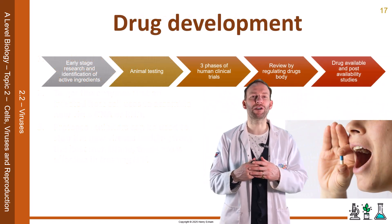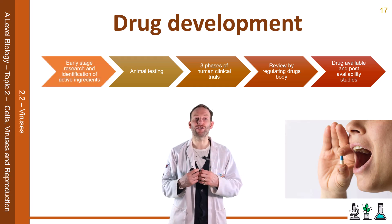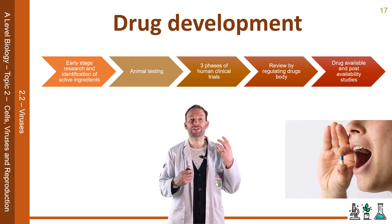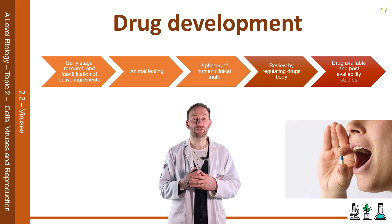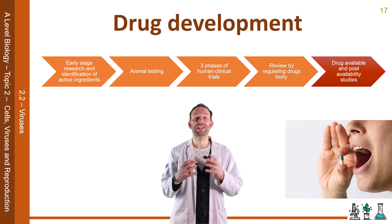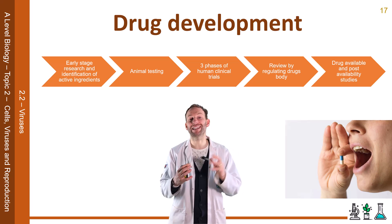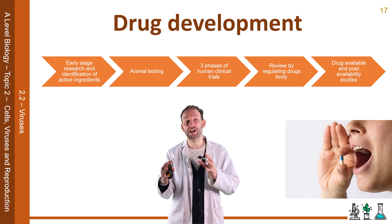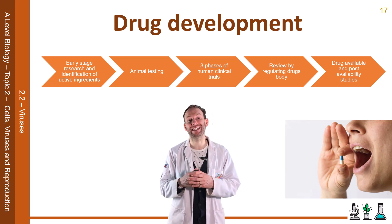Developing new drugs can take up to 10 years, and there are various stages to go through. The first is the research stage, where identification of active ingredients happens. Once that has happened, you move into animal testing phases, followed by three phases of human clinical trials before review by regulating bodies. Only then is the drug available, with post-availability studies continuing. However, in times of epidemic, the process may be speeded up to save lives — which has significant ethical implications.